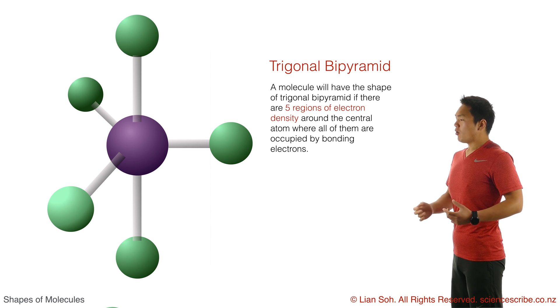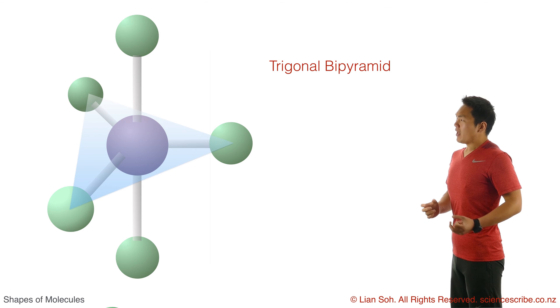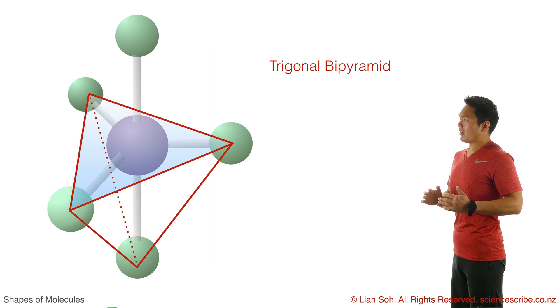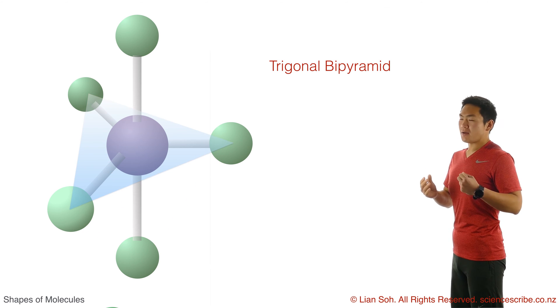Well, because if you look along the flat plane of this shape, it's actually based on a triangle. And then if you look along the vertical bits, it looks like there's a pyramid going up and a pyramid going down. So there's a triangular pyramid going up and a second one going down, so bipyramid means two pyramids.